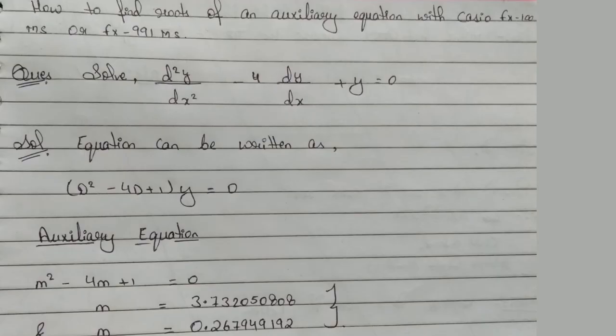So this is the question: Solve d²y/dx² - 4(dy/dx) + y = 0. Let's solve this equation.